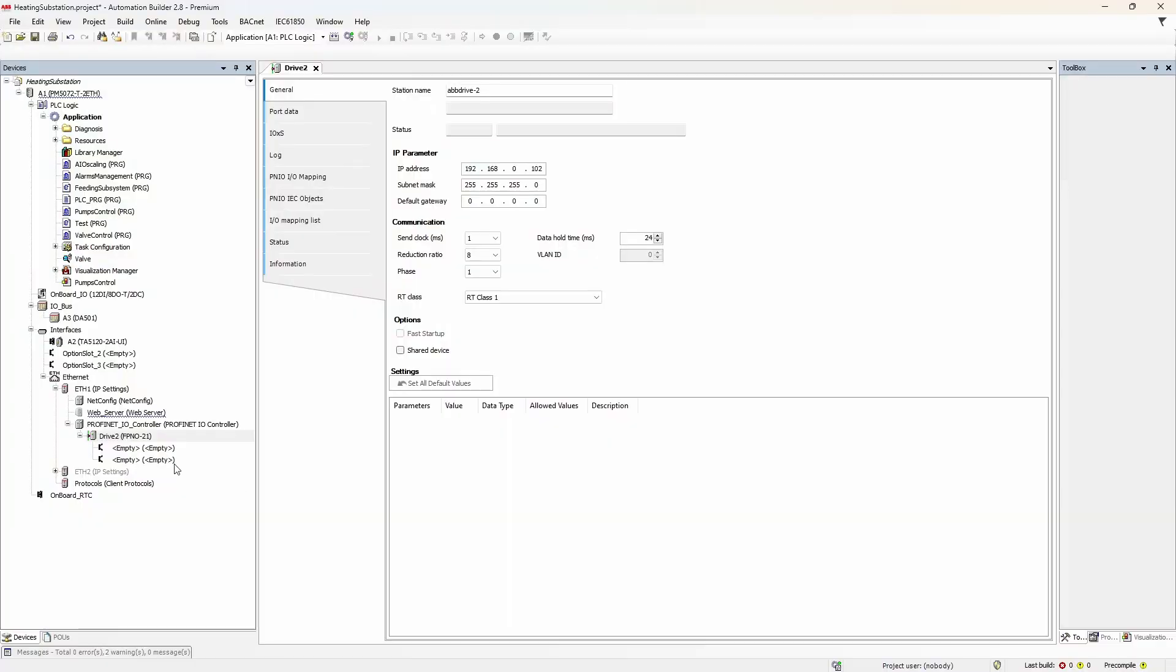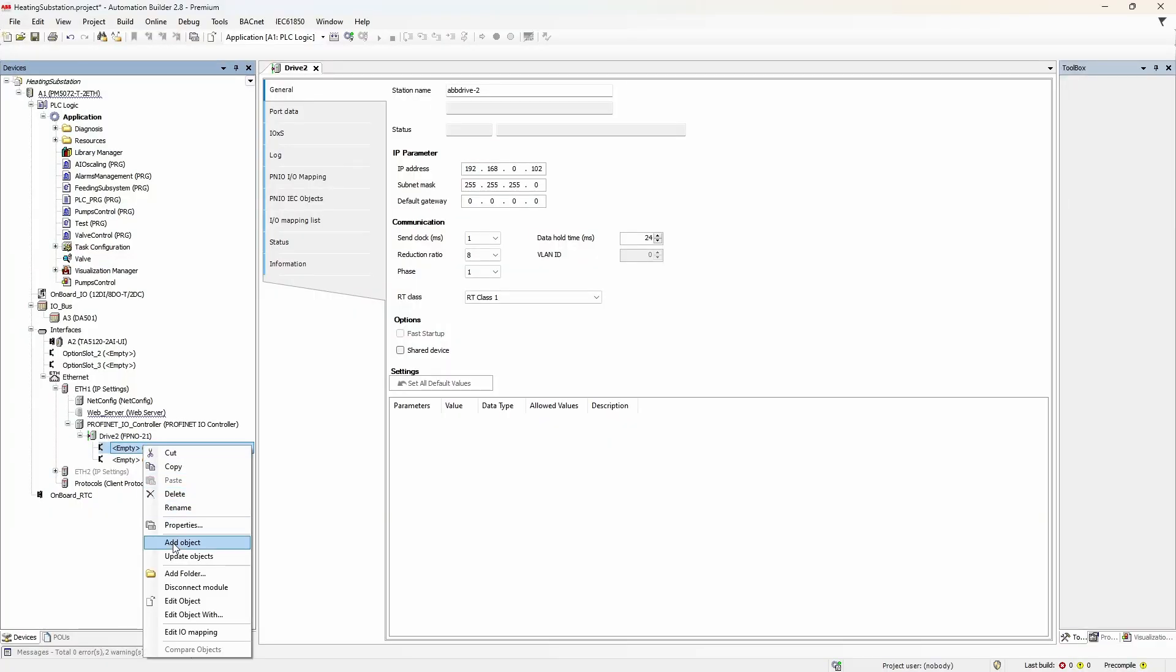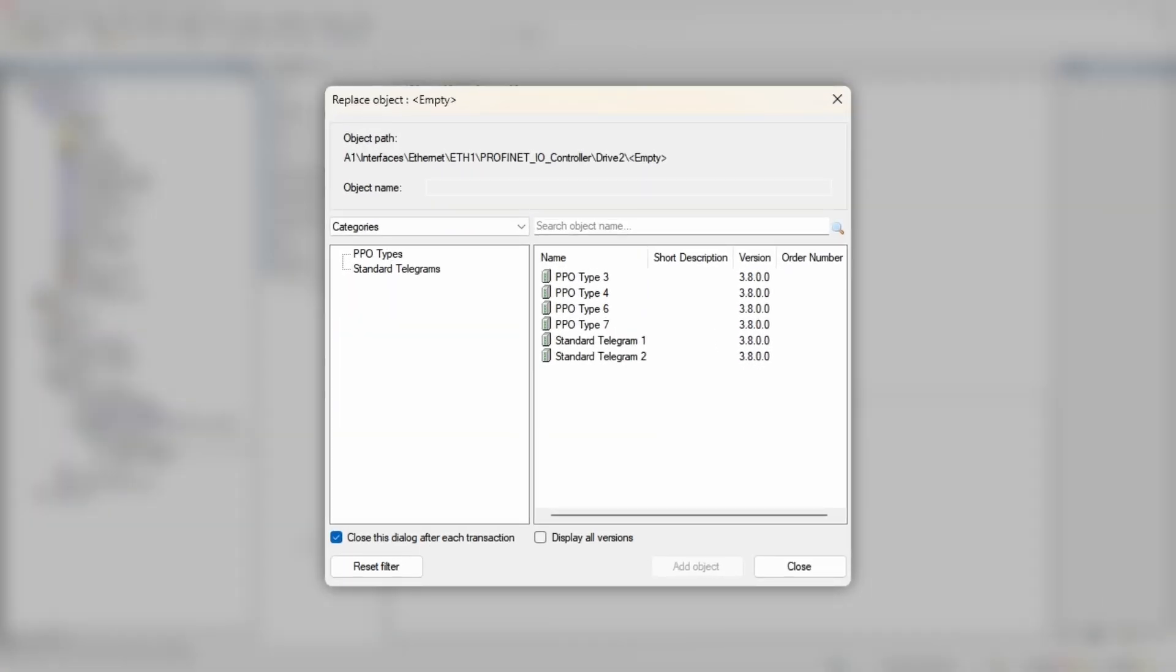By default, the drive ProfiNet.IO device doesn't have any data to exchange with the PLC cyclically. To edit, right-click on the first empty slot and then add object. In the pop-up window you will have to select PPO type. What is PPO, you're asking? It's a German abbreviation for Parameter Process Object, and basically it is just a cyclic telegram exchange between the ProfiNet.IO controller and the drive.